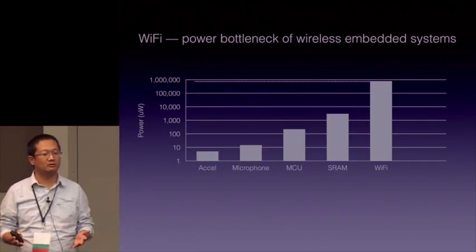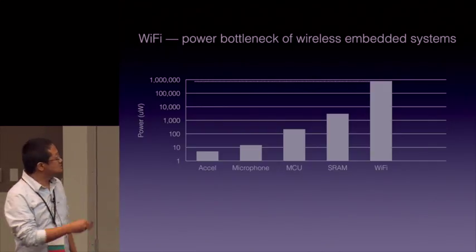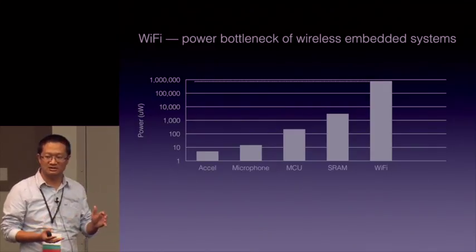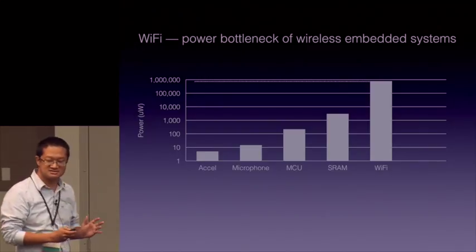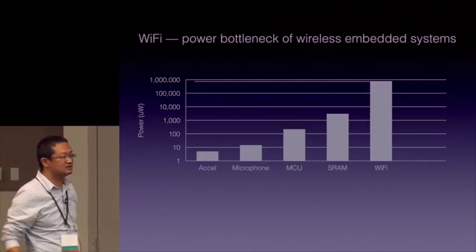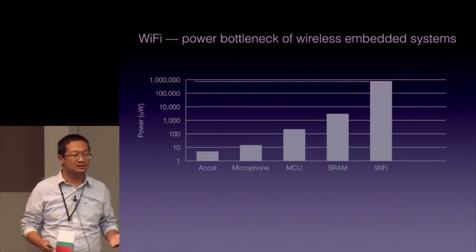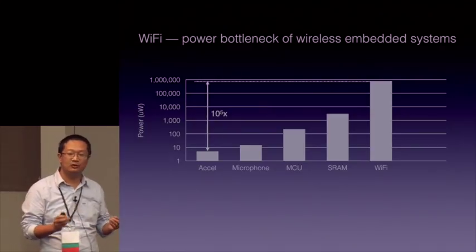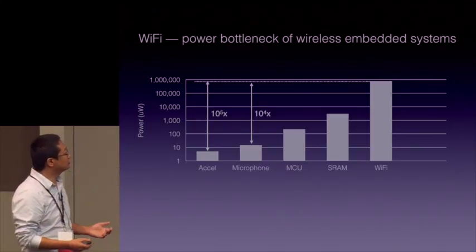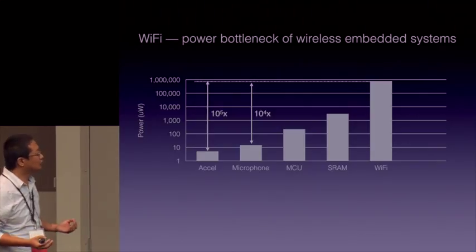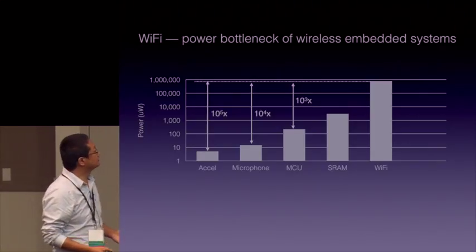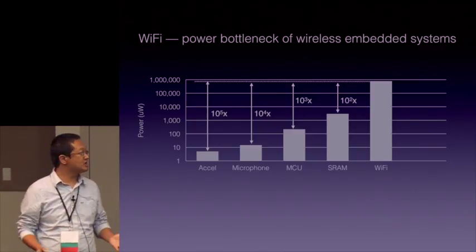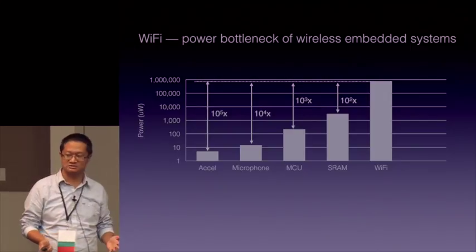Wi-Fi consumes lots of power during transmission. This table shows the power consumption of Wi-Fi radios versus other components in an embedded system. We can see that Wi-Fi consumes several hundreds of milliwatts — five orders of magnitude larger than a simple accelerometer, four orders of magnitude more than a microphone, three orders of magnitude more than a microcontroller, and two orders of magnitude more than SRAM storage.